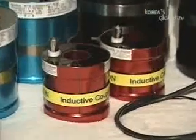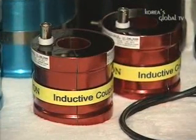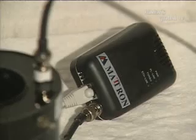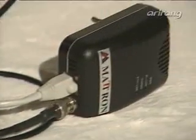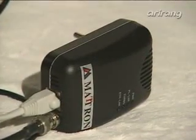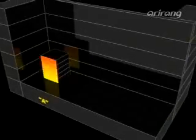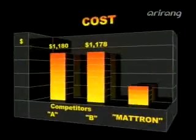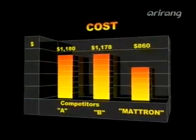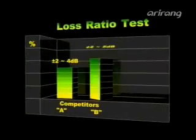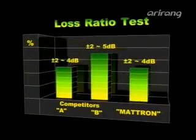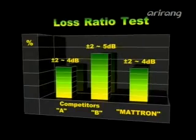Since Matron uses impedance matching technology to minimize signal loss in the high frequency band and send homogenous signals in the communication frequency band, safe communication is possible anywhere. Matron cut down the prices of existing couplers by 70%. They use magnetic materials with the patented technologies they have developed, so they do not have to pay royalties for existing foreign couplers and can lower prices.